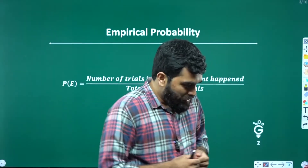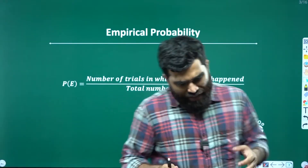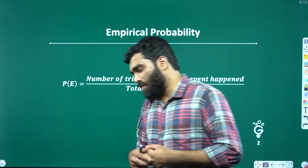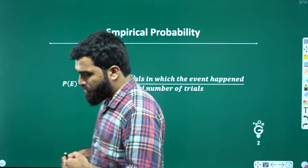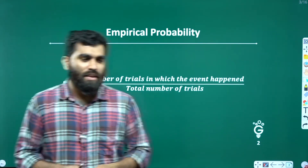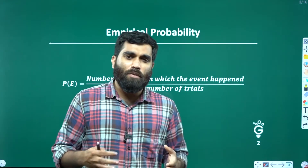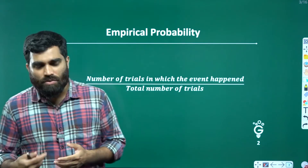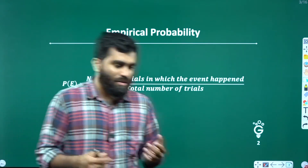Now, the question is, for anything we do, how do we calculate probability? For example, a very, very simple thing — we repeat the same thing in this chapter, we will repeat the same thing.